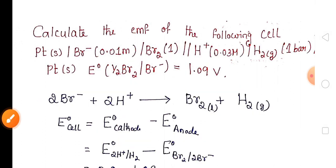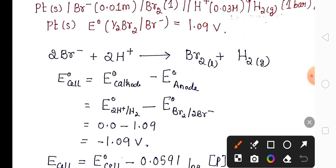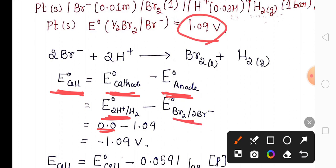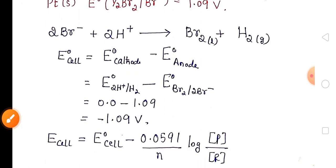So Br is anode and hydrogen is cathode. Now we will find the standard electrode potential of the cell using the formula: E°cell = E°cathode minus E°anode. Cathode is hydrogen, so the standard hydrogen electrode potential is zero volts, and anode is bromine whose electrode potential is given as 1.09. So we get E°cell = 0 − 1.09 = −1.09 volts.